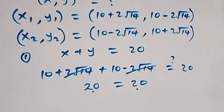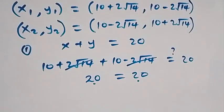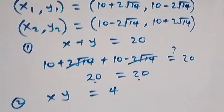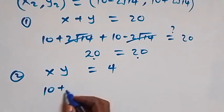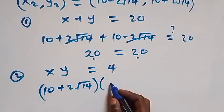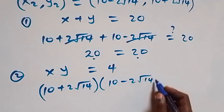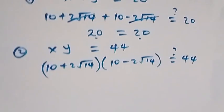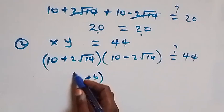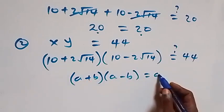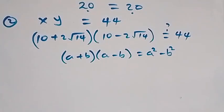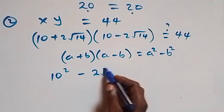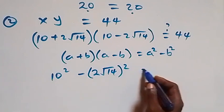Now checking equation two, x times y equals to 44. We have 10 plus 2 root 14 times 10 minus 2 root 14. This follows the identity a plus b times a minus b equals a squared minus b squared. So this gives us 10 squared minus 2 root 14 squared, which equals 44.